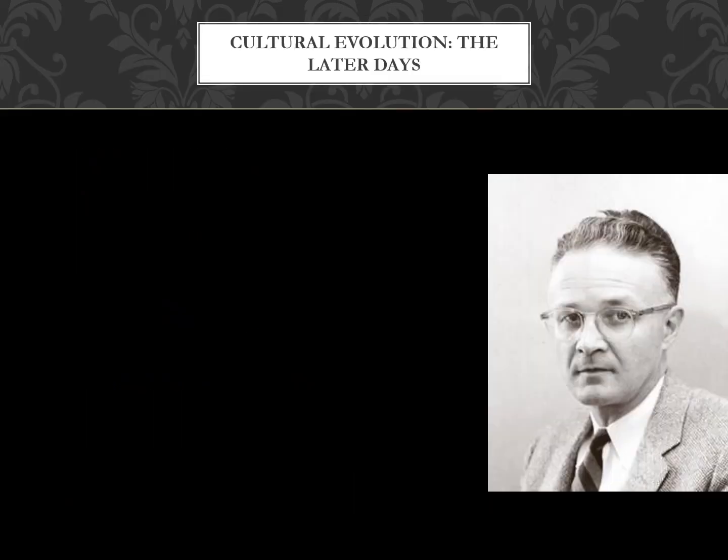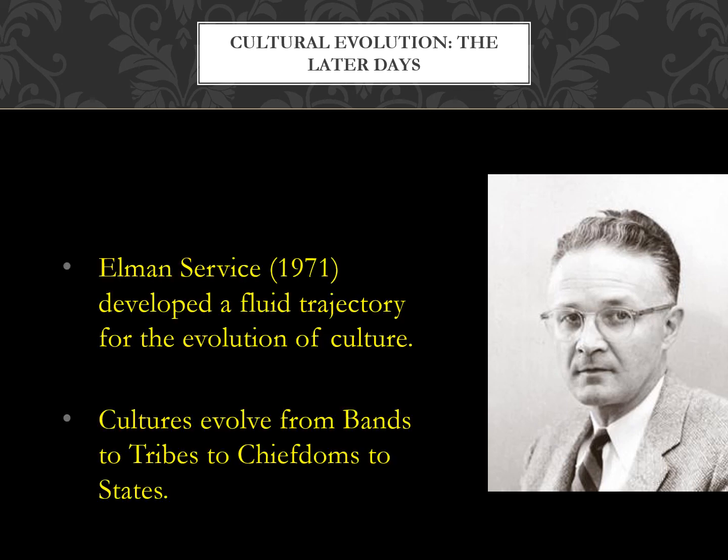Later, Elman Service in 1971 redeveloped cultural evolutionary theory with a fluid trajectory for cultural evolution based on population: bands, tribes, chiefdoms, and state-level societies. Service focused on cultural complexity and population size rather than specific traits a culture had to possess to advance. For example, the ancient Maya are considered a state-level society based on population size and cultural complexity, yet archaeologically they didn't have even a basic technology like the wheel — showing how fluid cultural evolution can really be.